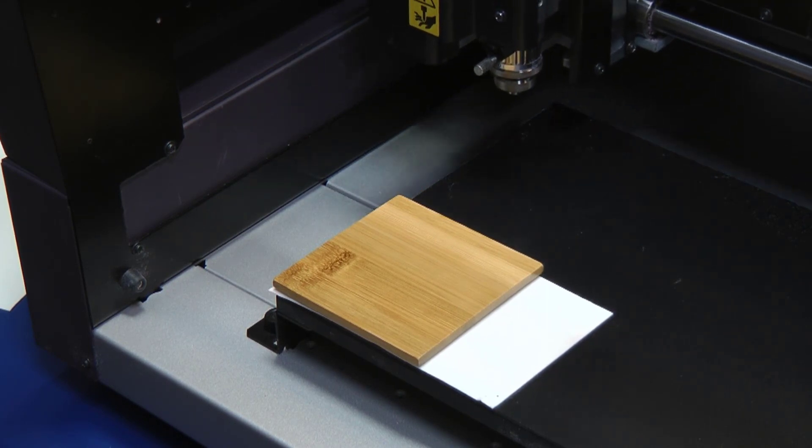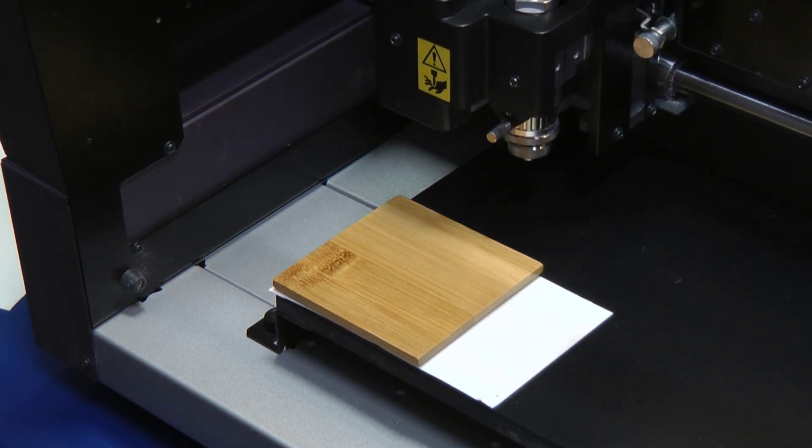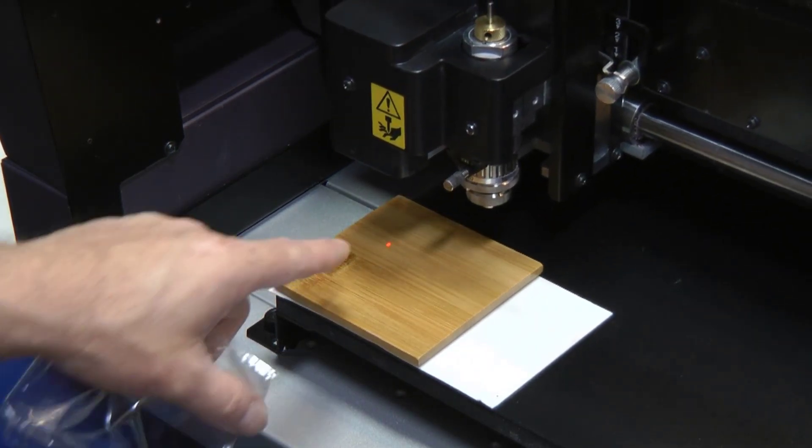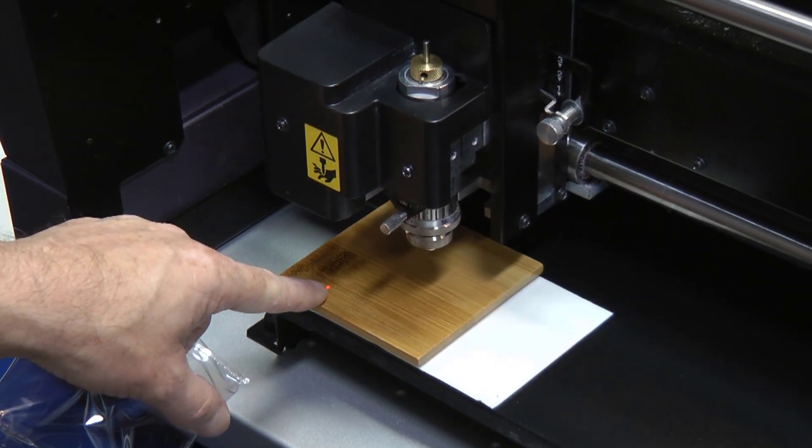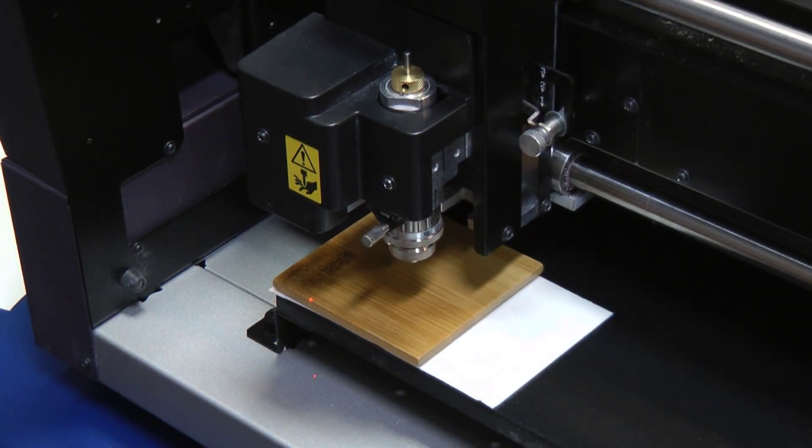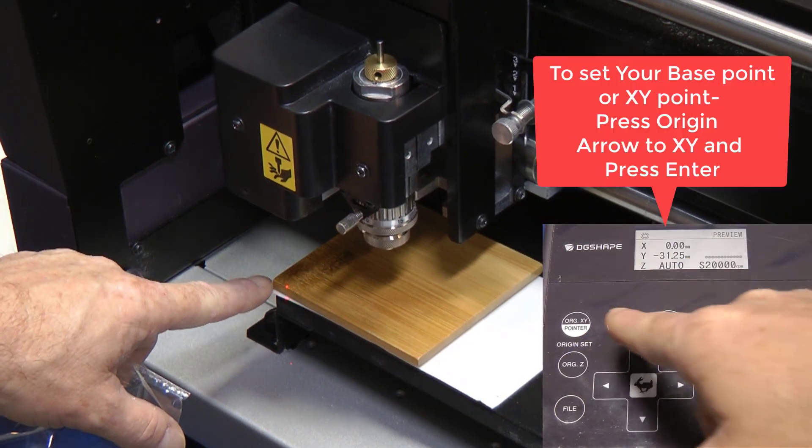Now after activating our laser, we'll bring the spindle unit to the front. Take our laser to the far left and bottom to set the base pointer XY.